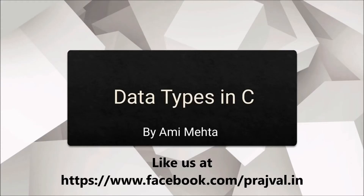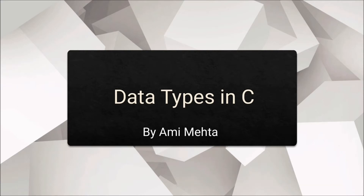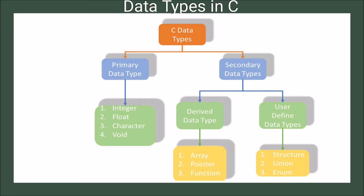Hello everyone, myself Ami Meita and here we discuss what is data types in C language. There are basically two types of data types: primary data types and secondary data types.